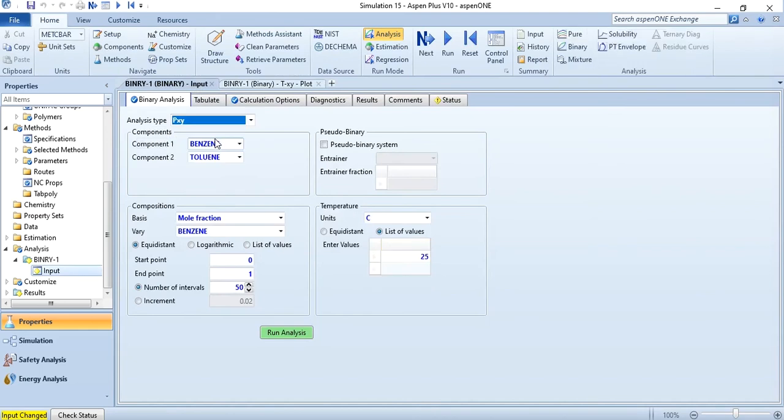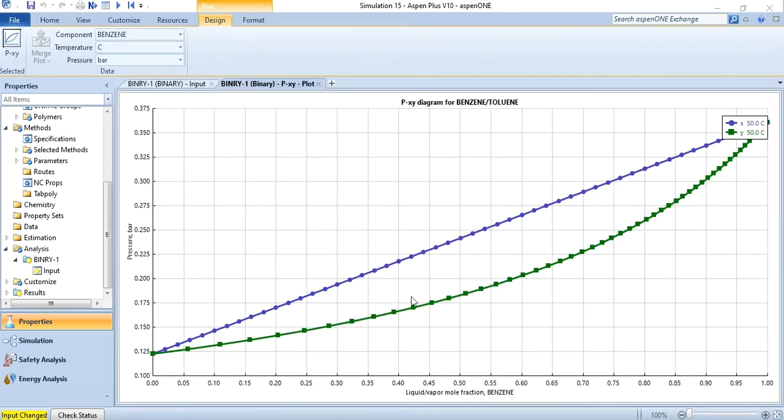I change the analysis type to PXY. Again it's benzene-toluene. Similarly both components are present, mole fraction of benzene from 0 to 1 with number of intervals as 50. And for temperature we will select 50 degree centigrade as given in the problem statement. Then we will run analysis. And you see you have again obtained a graph. This blue line represents the liquid line, saturated liquid line. This green line represents the saturated vapor line. It's a two phase mixture or two phase region. This section is subcooled. This is a superheated vapor.